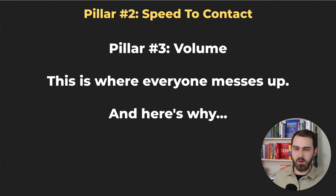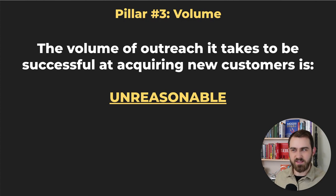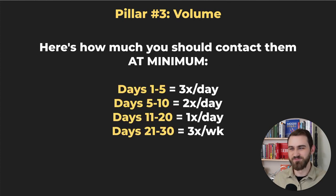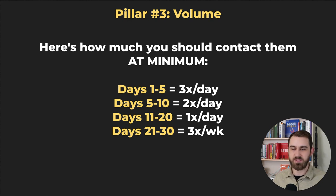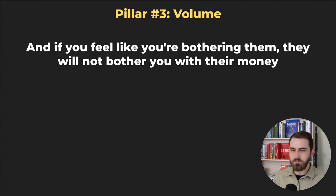Pillar number three is volume — this is where everyone messes up. The volume of outreach it takes to acquire a new customer is unreasonable, but you have to do it. Days one through five: contact them three times a day. Days five to ten: two times a day. Days eleven through twenty: once a day. Days twenty-one through thirty: three times a week. That's a combination of phone calls, texts, and emails. If you feel like you're bothering them, they will not bother you with their money.